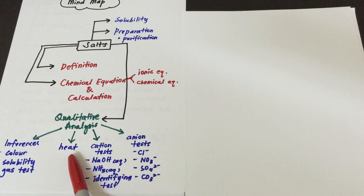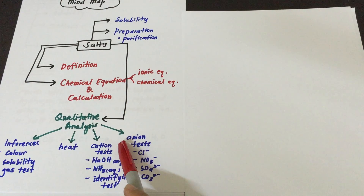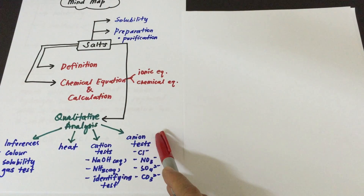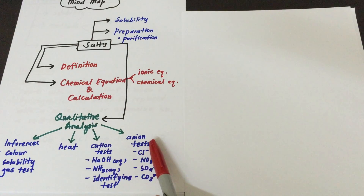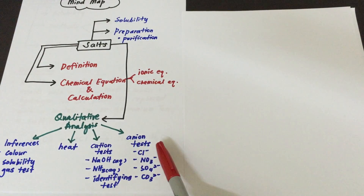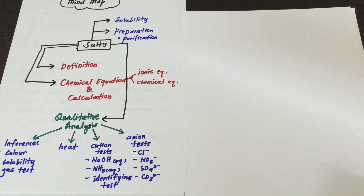After that, you move on to the effect of heat on different salts, then the cations and anions involved. There are different tests for cations and also different tests for the four anions: chloride, nitrate, sulfate, and carbonate.